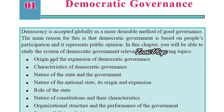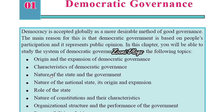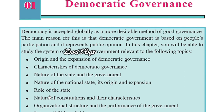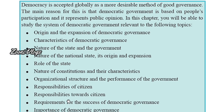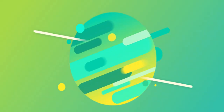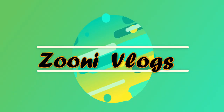Today we are going to learn about democratic governance under these relevant topics: origin and expansion of democratic governance, characteristics of democratic governance, nature of the state and government, nature of the national state, role of the state, nature of the constitution, organizational structure and performance of the government, responsibilities of citizens, requirements for the success of democratic governance, and the importance of democratic governance.